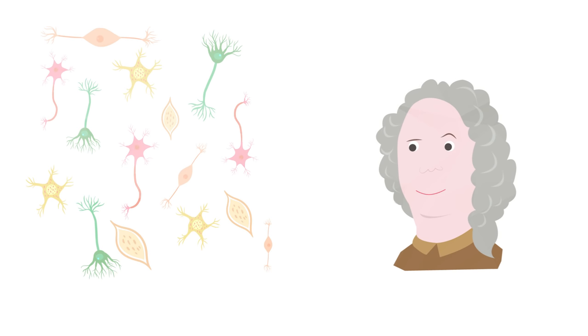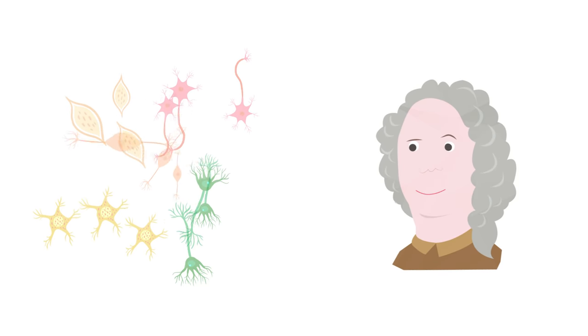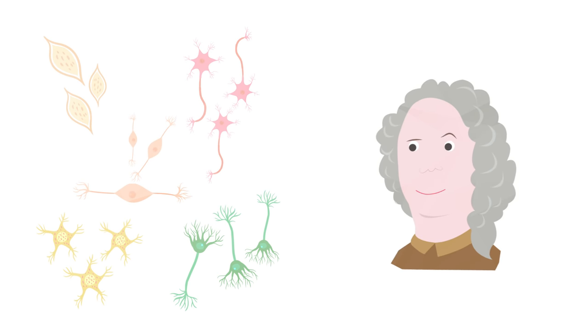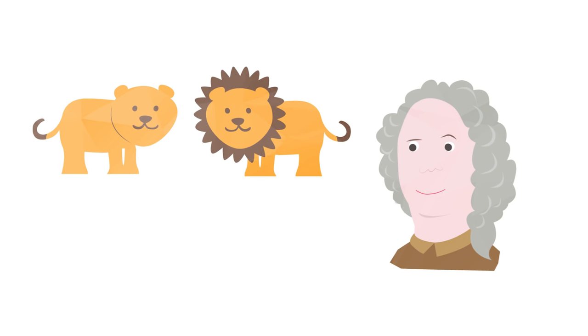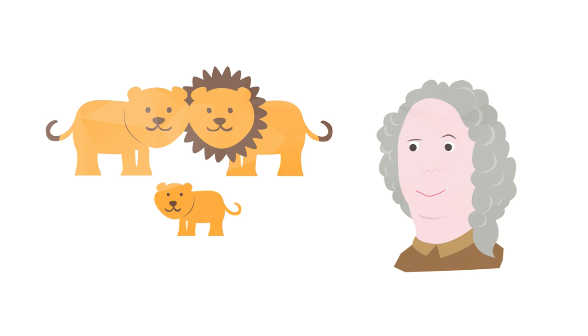By studying hundreds of organisms, Linnaeus devised a method of grouping them according to their shared physical features. Those with similar physical features could be classified together. The most similar organisms, those that could breed together and produce fertile offspring, were designated as belonging to the same species and given a Latin species name accordingly.